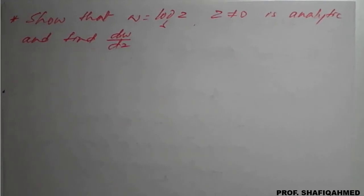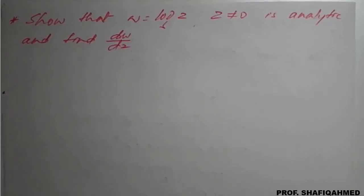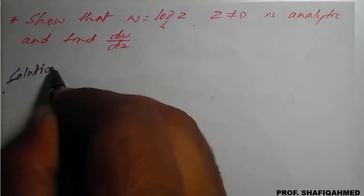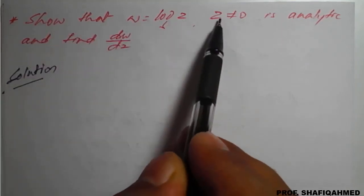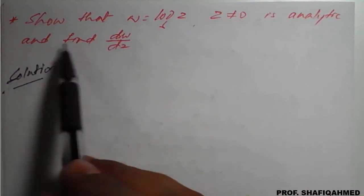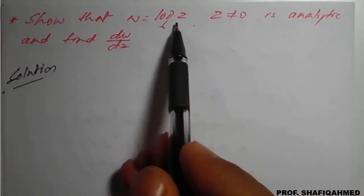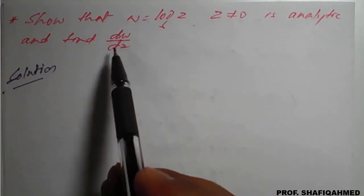Hello everyone. In this lecture, we will see a problem based on analytic function and its derivative under complex functions. The question is: show that w is equal to log z, where z is not equal to 0, is analytic and find dw by dz. We need to first check whether it is analytic or not, and also find its derivative.